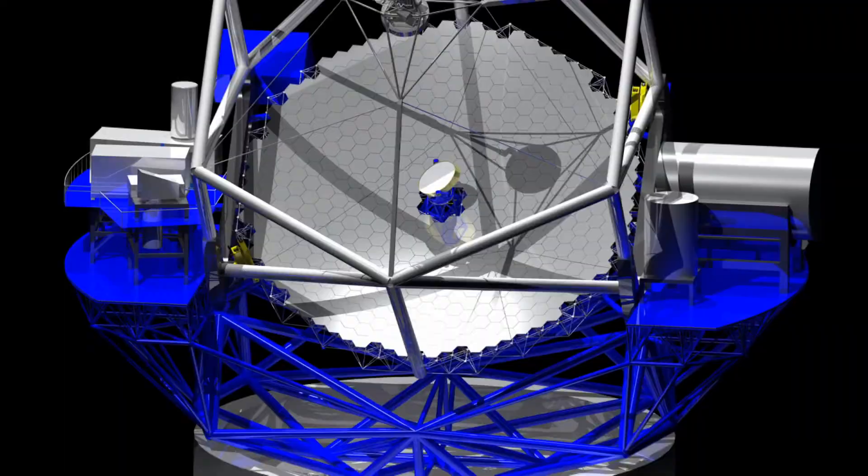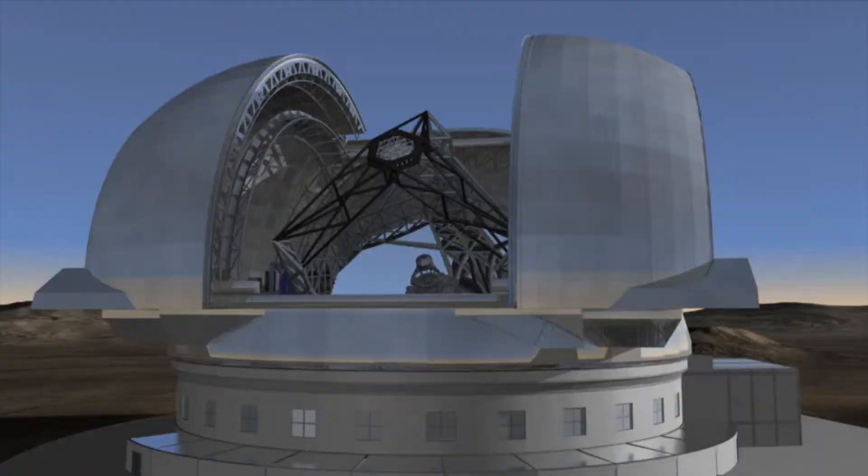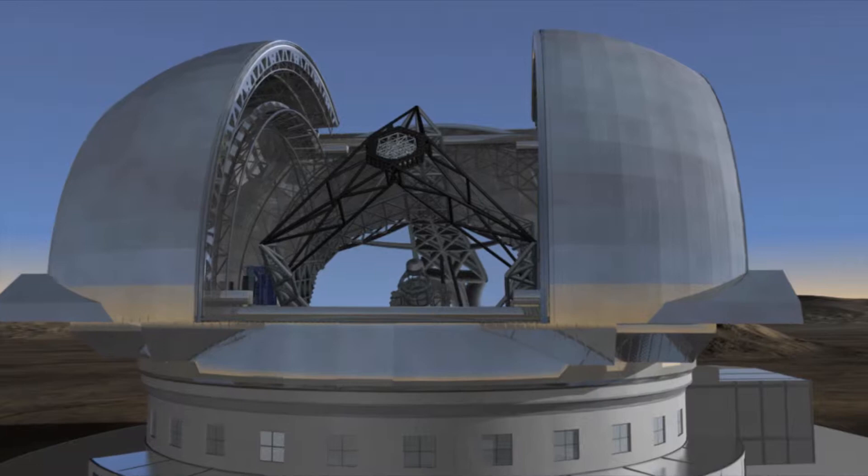In Europe, plans are ready for a European extremely large telescope. At 42 meters in diameter, its mirror will be as large as an Olympic swimming pool, twice the surface area of the 30-meter telescope.